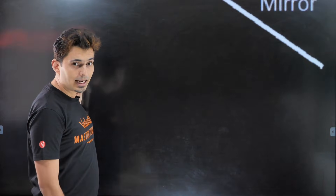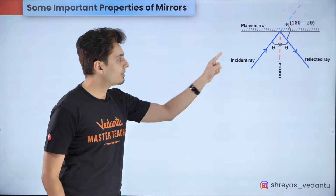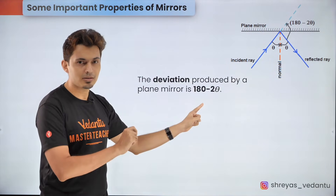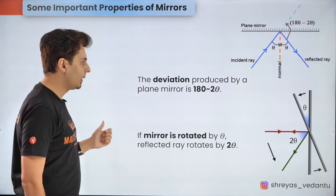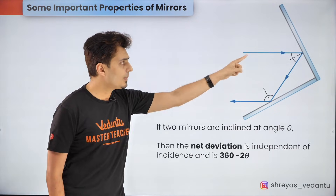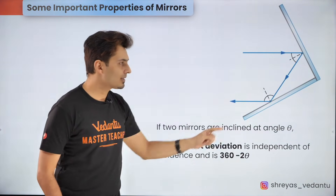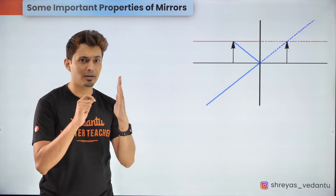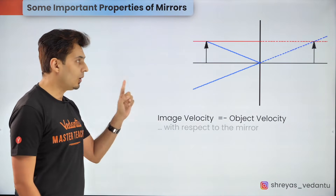If you take a mirror and place it in the path of light, the path of light gets deflected by a certain angle called the angle of deviation, which is the angle the reflected ray makes with the incident ray. The angle of deviation for a single surface is given by 180° minus 2θ. If you rotate a mirror by angle θ, the reflected ray rotates by twice the angle, which is 2θ. If you have two mirrors inclined at angle θ, the final deviation of the reflected ray with respect to the incident ray depends only on the angle between the two mirrors and is given by 360° minus 2θ. If the object moves toward the mirror, the image velocity equals the object velocity but with a negative sign since directions are opposite — all with respect to the mirror.